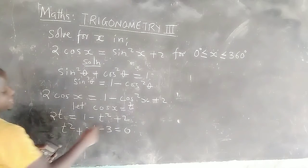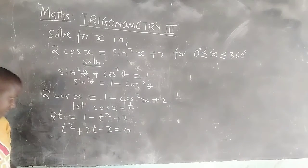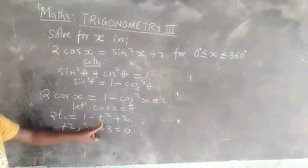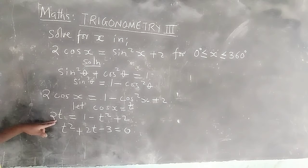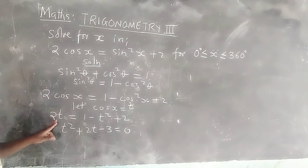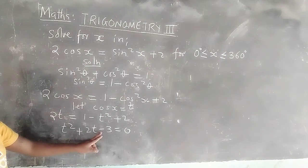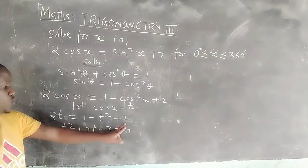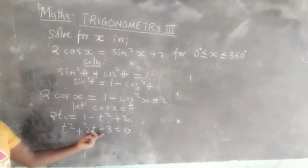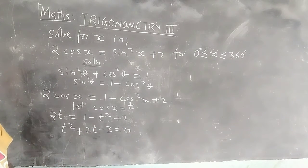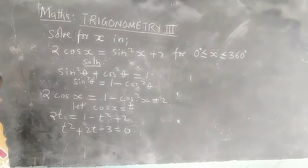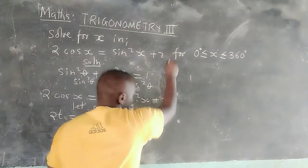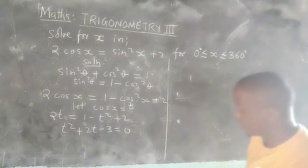When 3 is brought to the other side, it becomes negative. So one side remains with zero, giving us: t² + 2t − 3 = 0, because 1 + 2 = 3, brought to this side becomes negative. Now we can solve this quadratic equation.